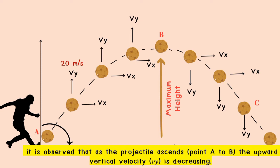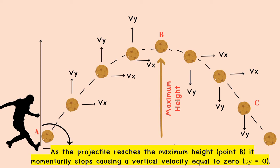It is observed that as a projectile ascends from point A to point B, the upward vertical velocity Vy is decreasing — for example, from 20 meters per second to 15, then 10, then 0 meters per second. When it reaches its maximum height, Vy becomes zero. This is because the direction of gravity is opposite to the direction of the projectile's motion. At point B, the projectile momentarily stops, so Vy equals zero.